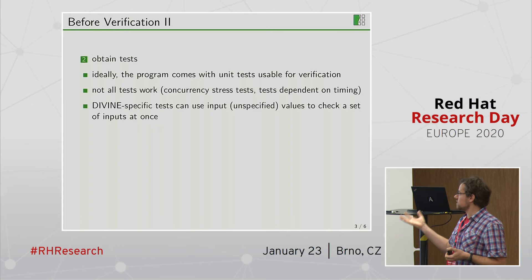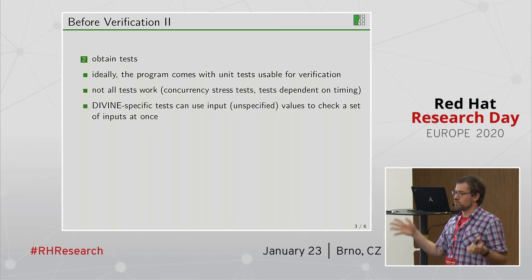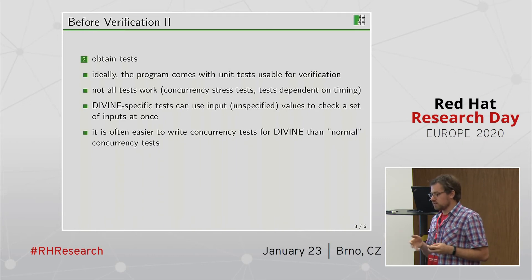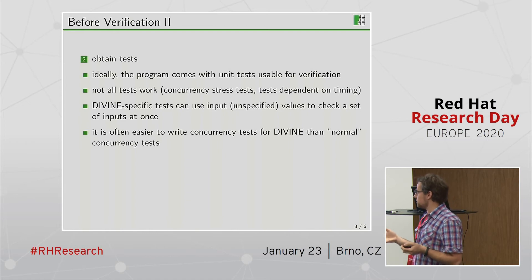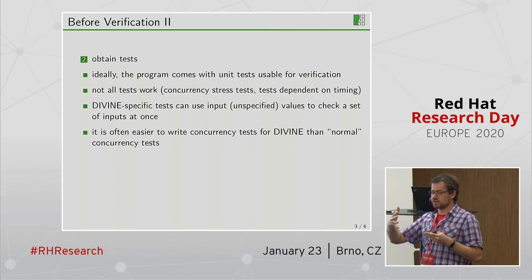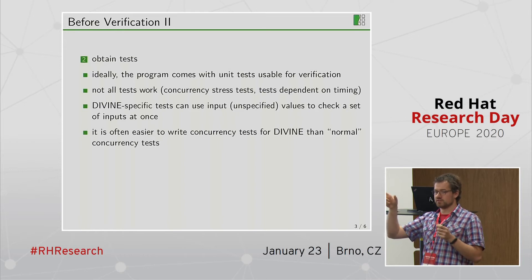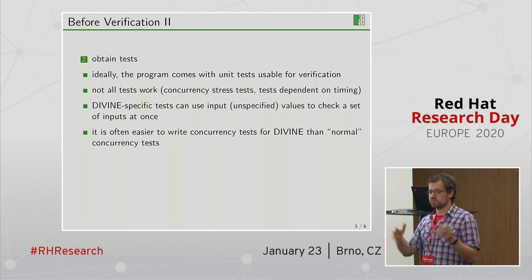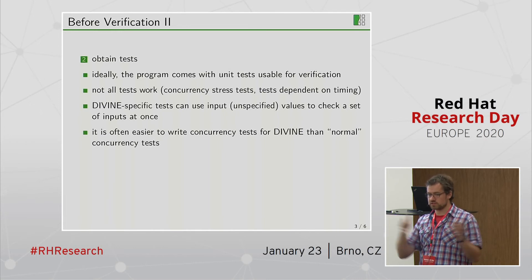One thing you can do is use unspecified values. You can say that x has some value which is, for example, a positive integer, and then feed this to some function. In the case of concurrent programs, you can write tests which no longer need to be stress tests, because Divine will check that given your two threads in the test, it will look at every possibility that these two threads interact such that there will be an error. It will check all the possibilities of interactions, so you don't need a big stress test hoping the problematic interaction happens during the long run.